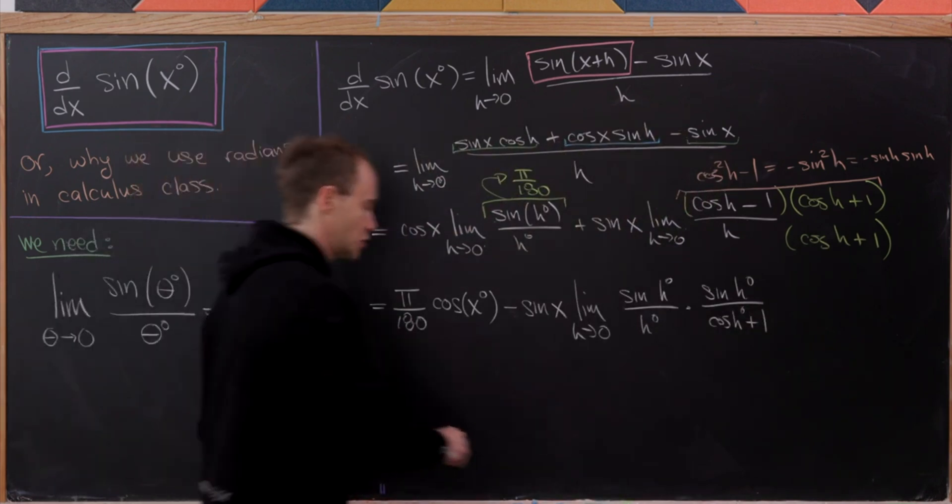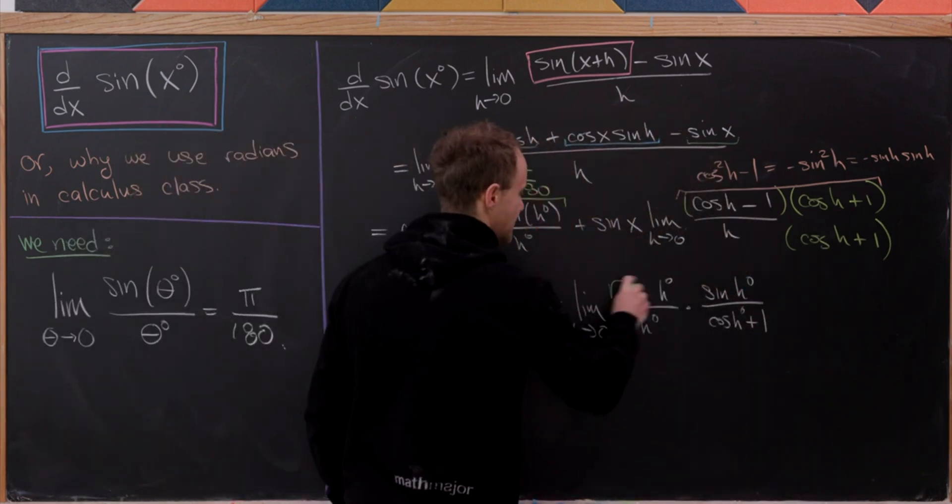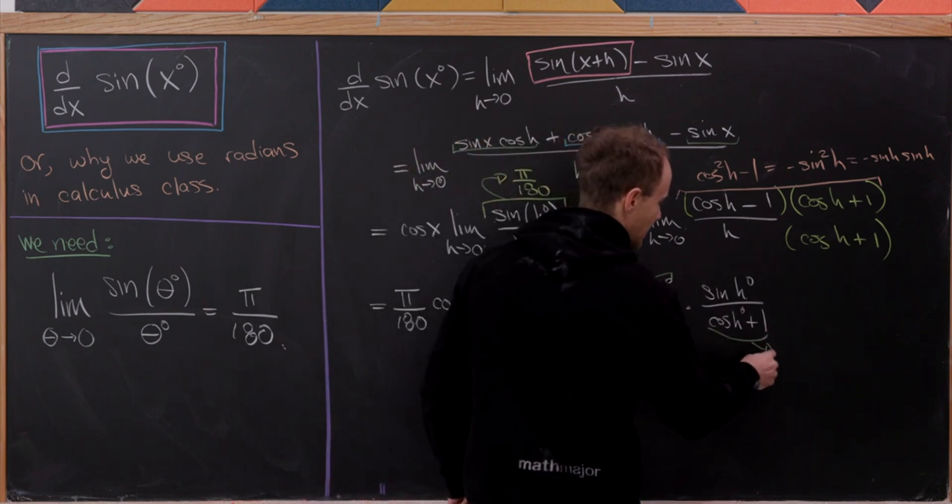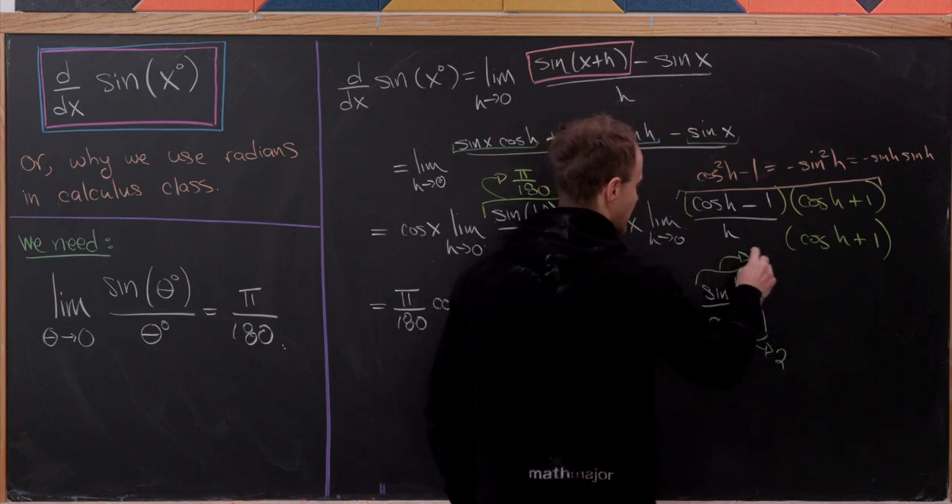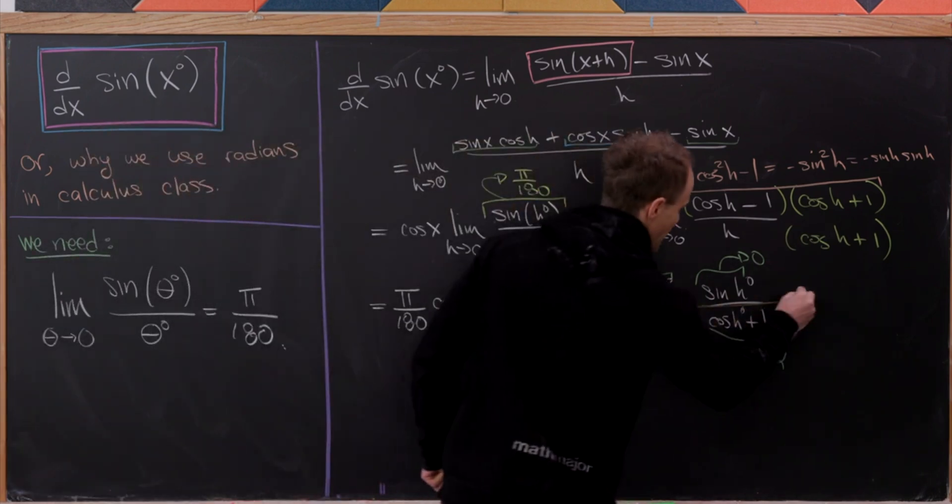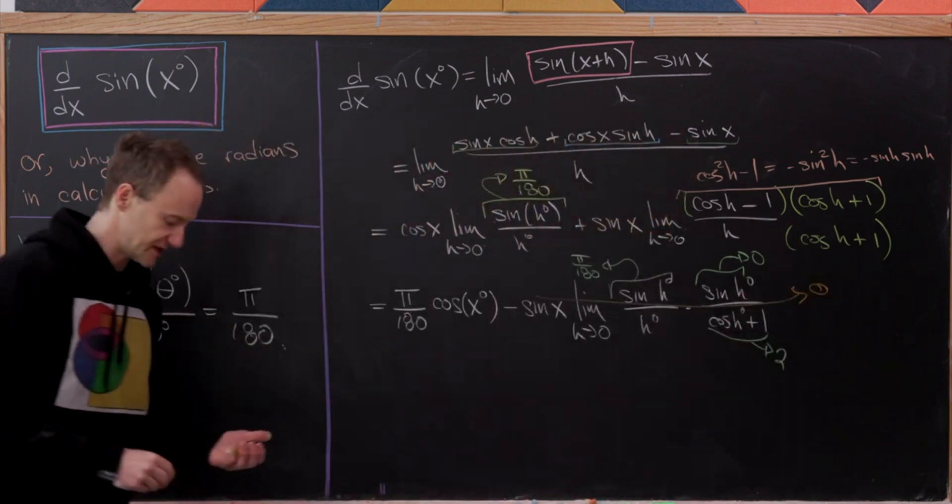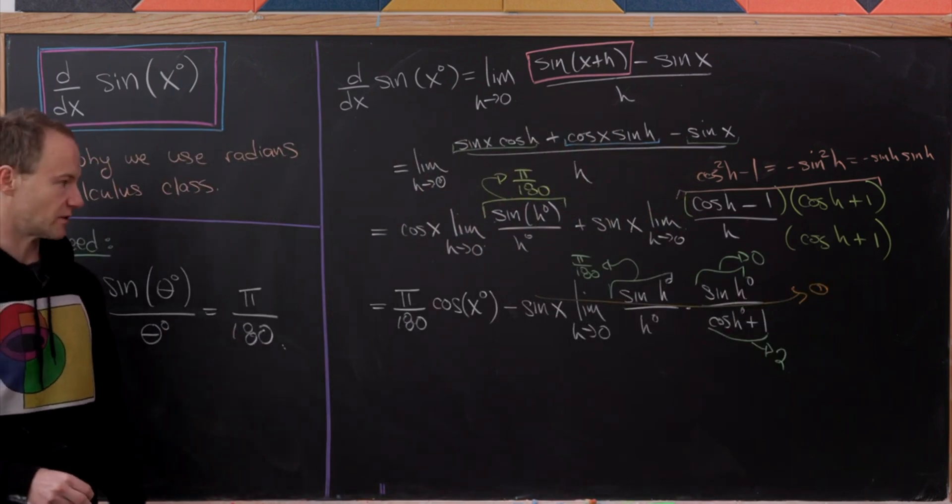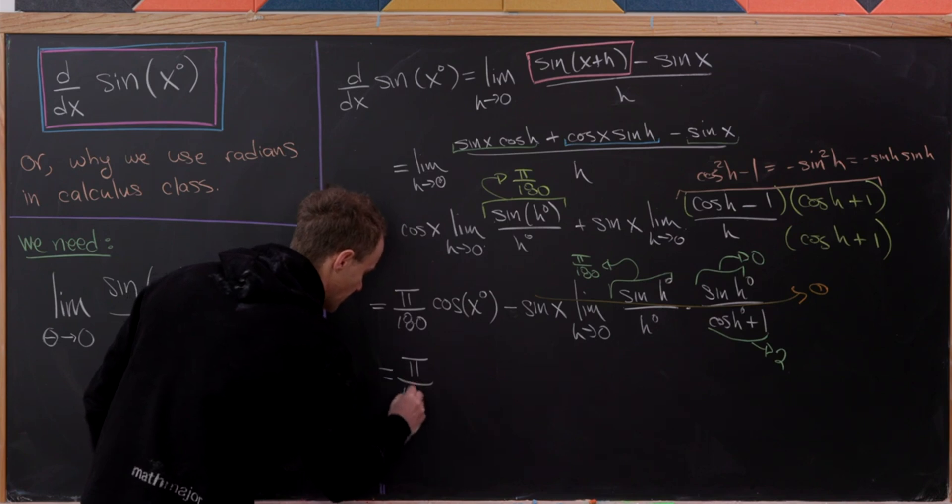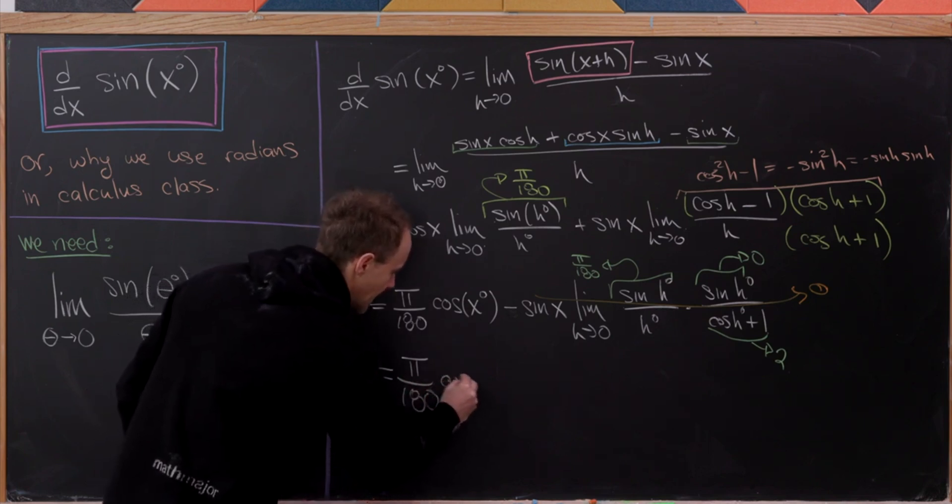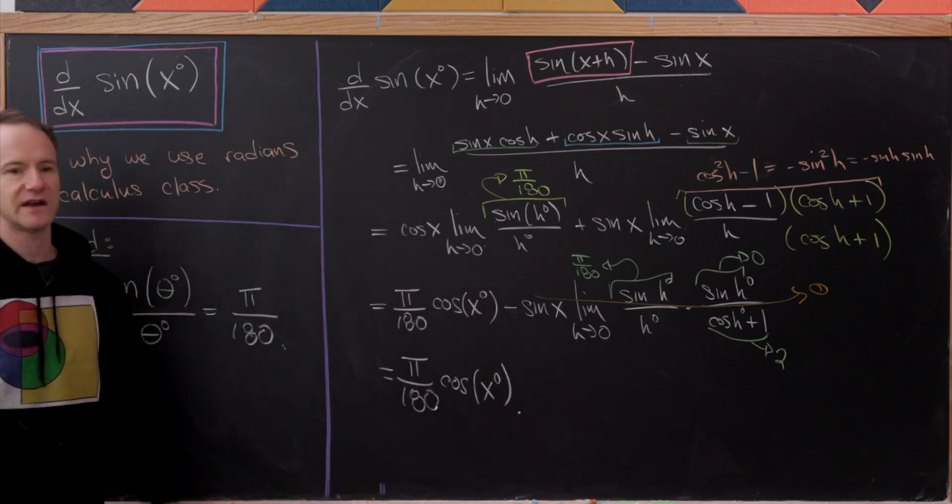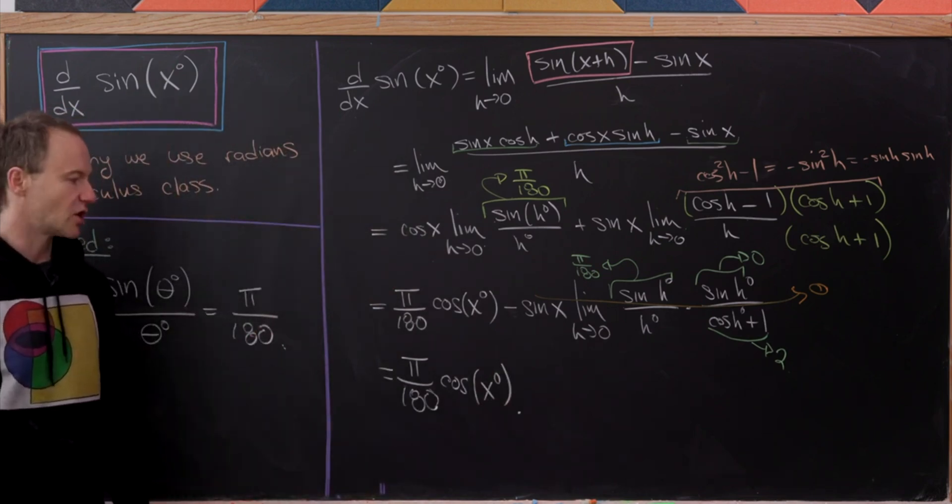But now we can use our tool again. So observe that this bit will approach pi over 180. This denominator approaches 2, whereas this numerator approaches 0. So that means this whole second term simply approaches 0, because we have that numerator approaching 0 and everything else is approaching a non-zero real number. So in the end that leaves us with this single term: pi over 180 times cosine of x degrees. So there we have it. The derivative of the sine of x degrees is pi over 180 times the cosine of x degrees.